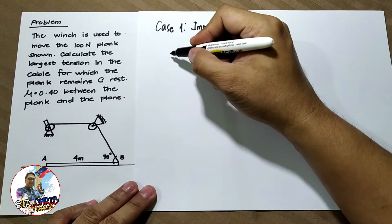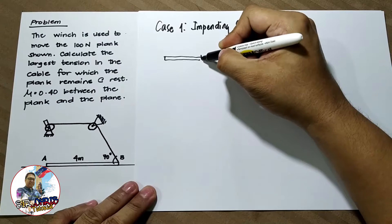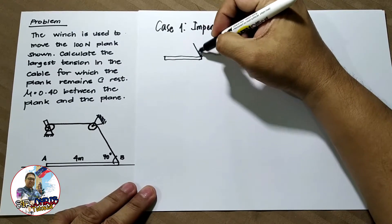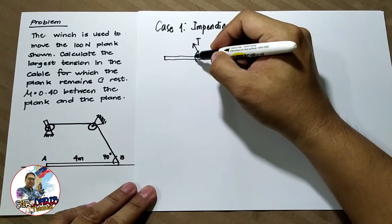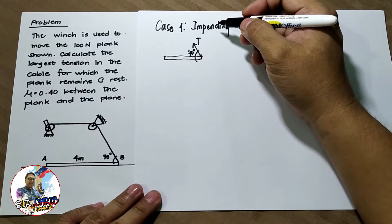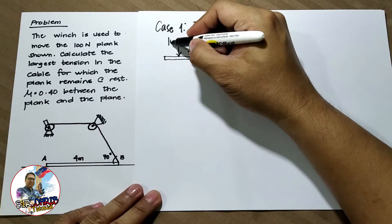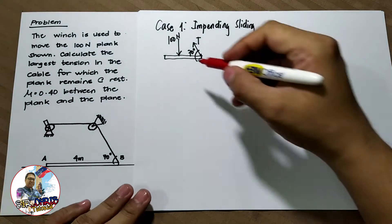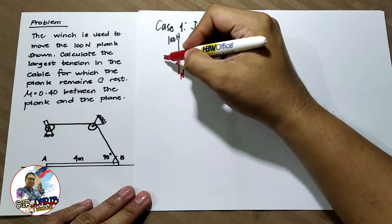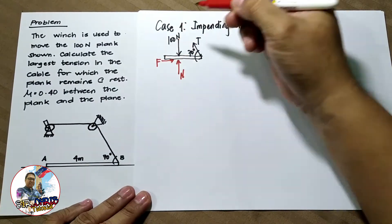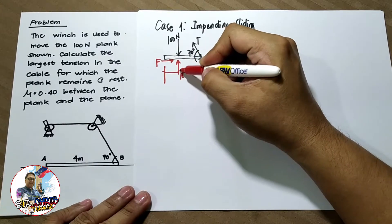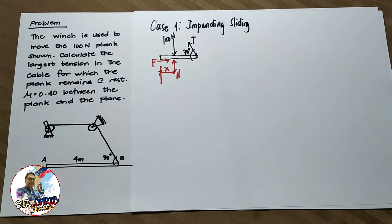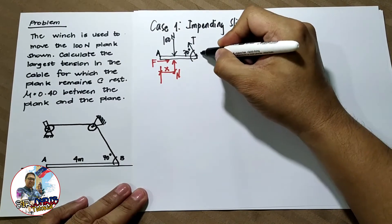If we draw the free-body diagram, we have the plank with the tension on the cable at 70 degrees, and the weight of the plank which is 100N. Other forces include the normal force and the frictional force. The normal force will be acting at a certain distance x from point A. This is point A and this is point B.